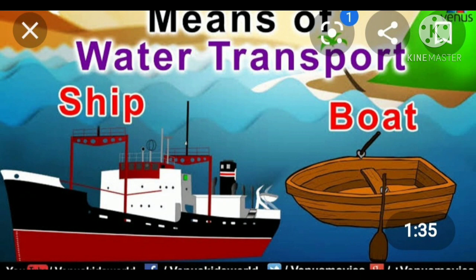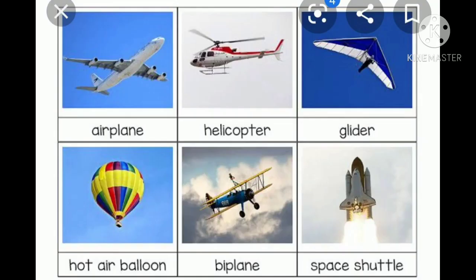Next, coming to air transport. Do you know air transport? I will show you some pictures. This comes under air transport — we move in the air. Aeroplane, helicopter, glider, hot air balloon, biplane, space shuttle — all this comes under air transport. Air transport is the fastest means of transport among all others. What are they? Aeroplane, helicopter, jet planes, etc.